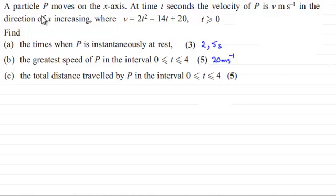In these questions we've had this particle P which moves along the x-axis, and at time t seconds the velocity of P was v meters per second in the direction of x increasing, and v was given by this equation here, 2t squared minus 14t plus 20, where t was greater than or equal to 0.